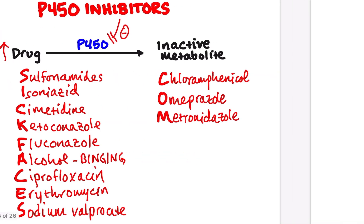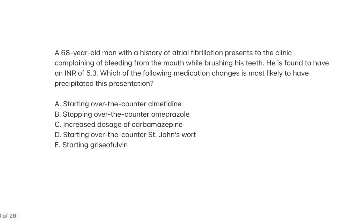Let's put this all together with a question. We have a 68-year-old man with a history of AFib who presents to the clinic complaining of bleeding from the mouth while brushing his teeth. He's found to have an INR of 5.3 — that's too high; we usually want it 2 to 3, maybe 2.5 to 3.5. Which of the following medication changes is most likely to have precipitated this presentation? A: Starting over-the-counter cimetidine. B: Stopping over-the-counter omeprazole. C: Increased dosage of carbamazepine. D: Starting over-the-counter St. John's wort.